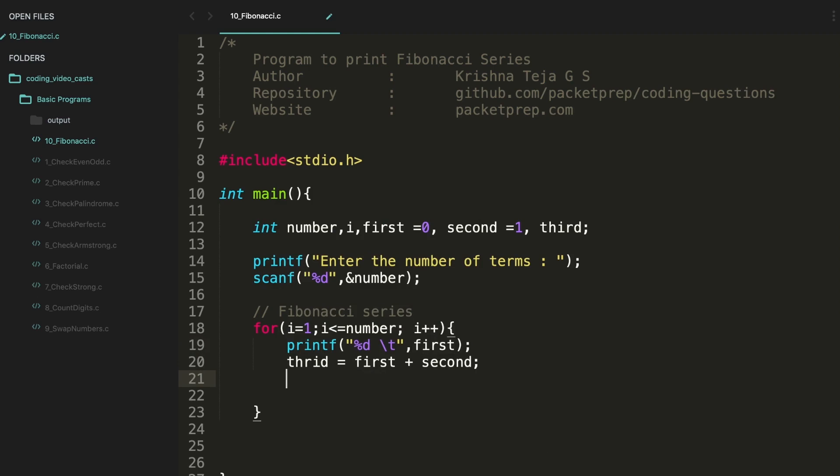So as we print the first number, then let's calculate the third number. Third is first plus second. Now then just change the pointers. In first we're going to store the second one, and in second we're going to store the third one. That's it. This loop will keep on iterating. It will go until the number. I think there's a small error. This is third. All right, I think this should work. Let's compile this.